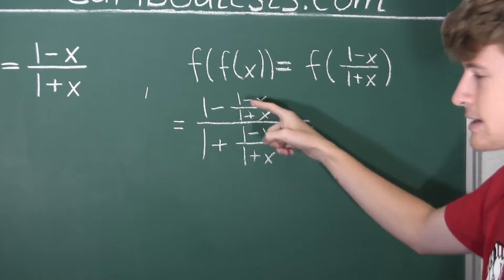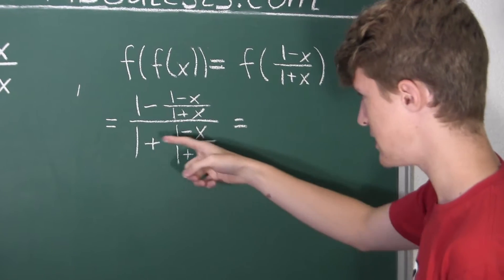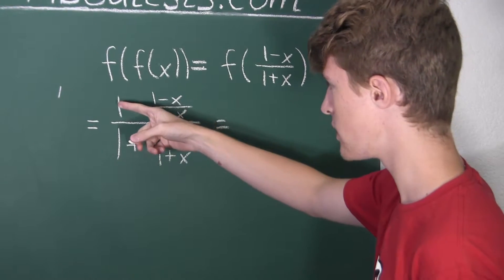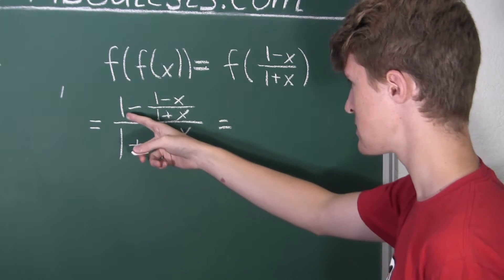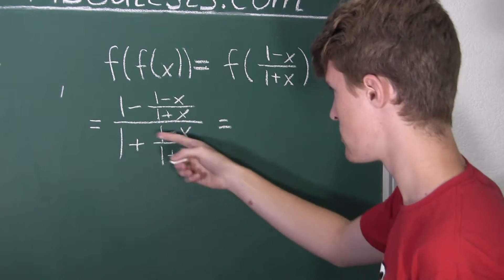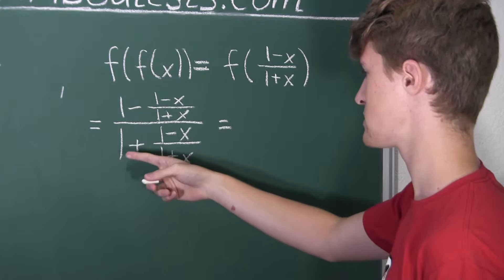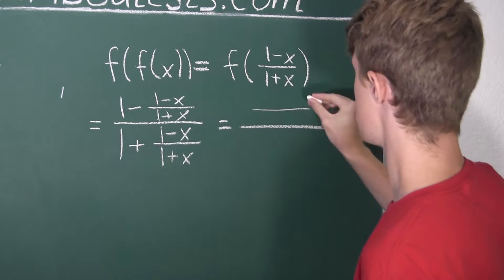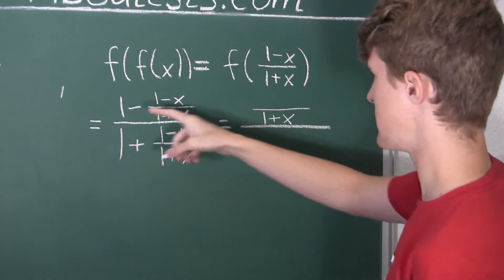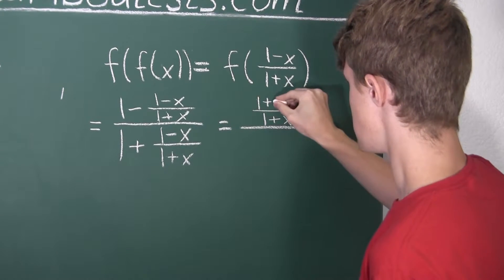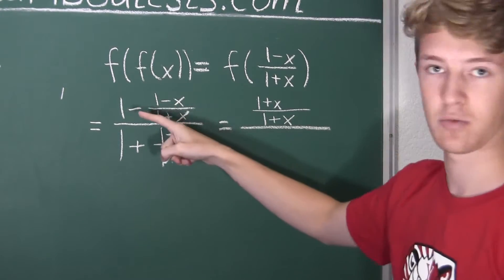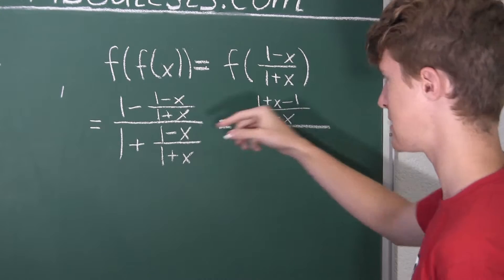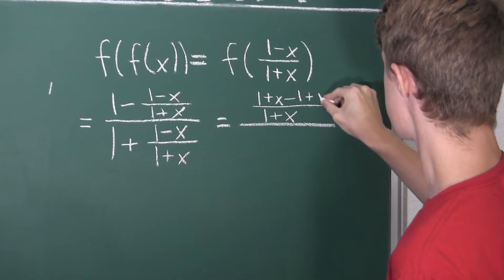Now we want these two terms to have the same denominator. So instead of writing 1 in the numerator, we will write 1 plus x divided by 1 plus x, so that we have the same denominator. We then have 1 plus x, and now minus this fraction, giving us minus the 1. Minus minus then cancels out to plus x.